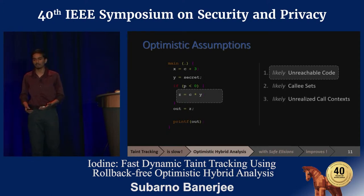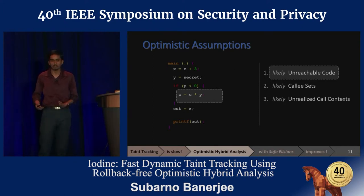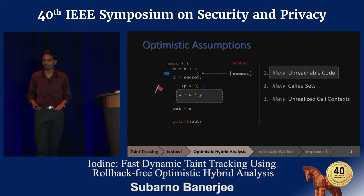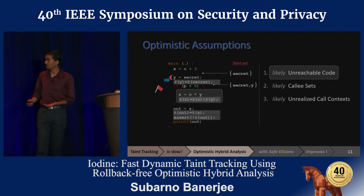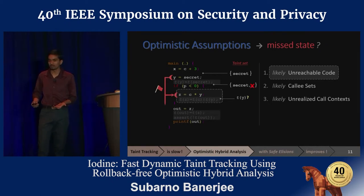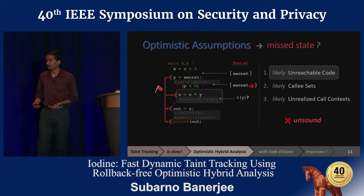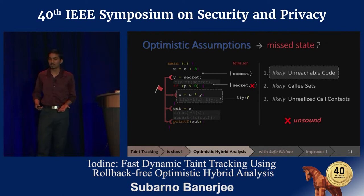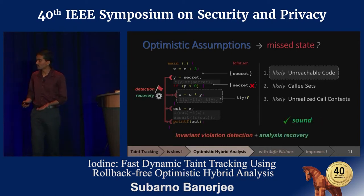We use two other types of invariants that deal with function pointer callees and function call contexts. As long as these invariants do not fail in an execution, the analysis outcome is the same as the conservative sound approach. But what happens if an invariant fails? In our example, we started with the tainted secret in the taint set, and after executing y equals secret, we would have tainted y. But using the optimistic assumptions, we elided tracking y. If the invariant ever failed and we execute z equals c times y, we have no idea if y is tainted. As a result, we lose tracking the taint flow, and y can propagate to z and out and leak without being detected. When the invariant failed, eliding y's taint monitor resulted in losing y's tainted state, which would require us to roll back to recover this lost analysis metadata state.